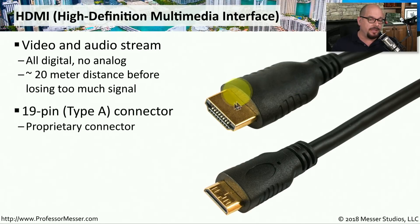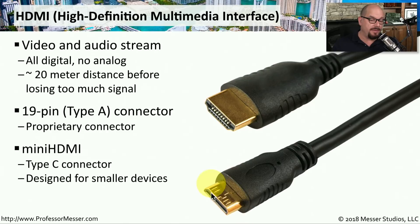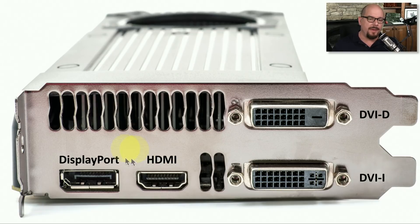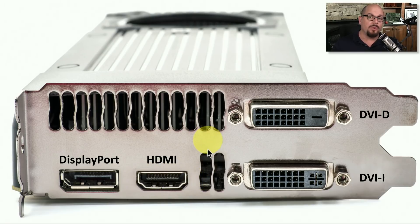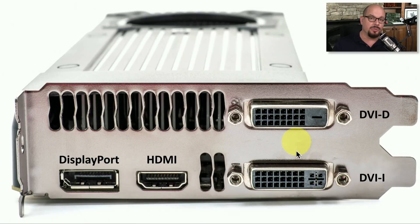An HDMI connector is usually the Type A connector, which is a 19-pin connector proprietary to HDMI. There is also a smaller HDMI connector called Mini HDMI, a Type C connector designed for smaller devices such as video cameras. Here's a video card — the back of the card that extends out of the computer — and you can see there is an HDMI connector at the bottom. This card also supports other video connector types, including a DisplayPort connector and two different DVI connectors.